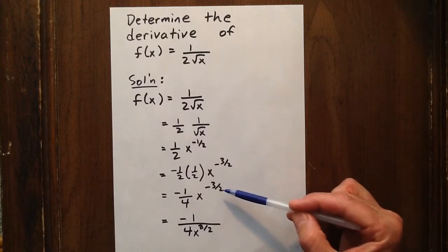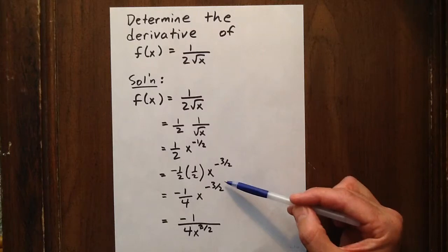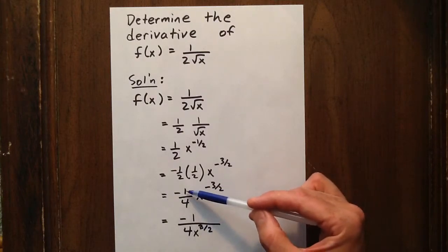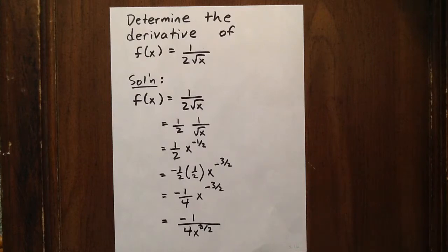Well, x to the exponent negative 3 halves is the same as 1 over x to the exponent positive 3 halves. Multiplying negative 1 over 4 times that quantity gives us negative 1 over 4 x to the 3 halves.